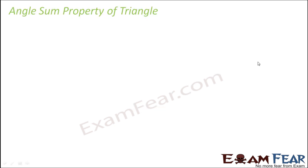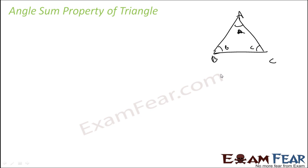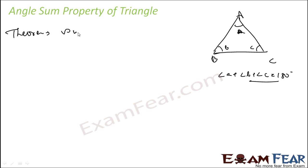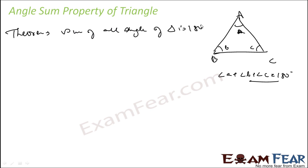So let us learn the angle sum property of a triangle. For a given triangle ABC, this is angle A, this is B, and this is C. Angle A plus angle B plus angle C is equal to 180 degrees. Sum of all angles of a triangle is 180 degrees. There is a theorem for this.